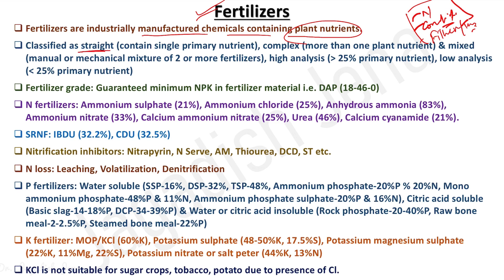Fertilizers are classified in different ways. A straight fertilizer contains only a single primary nutrient — nitrogen, phosphorus, or potassium. Primary macronutrients are nitrogen (N), phosphorus (P), and potassium (K); secondary macronutrients are calcium, magnesium, and sulfur. For example, urea contains only nitrogen at 46%, so it is a straight fertilizer.